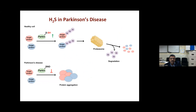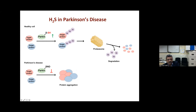In Parkinson's disease, healthy cells contain the protein parkin, which degrades accumulated proteins through ubiquitination and proteasomal degradation. In Parkinson's disease, parkin becomes nitrosylated and can no longer perform ubiquitination or drive proteasomal degradation. As a result, proteins aggregate — leading to accumulation of alpha-synuclein deposits (Lewy bodies), a hallmark of Parkinson's disease. This occurs because H₂S levels are low.